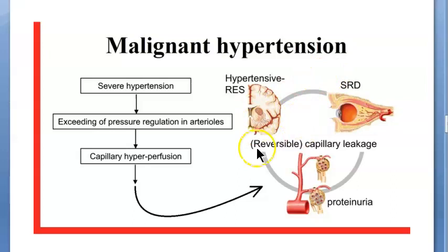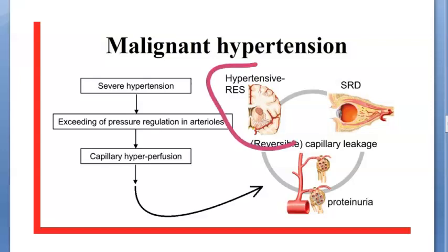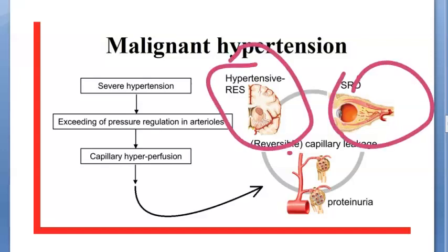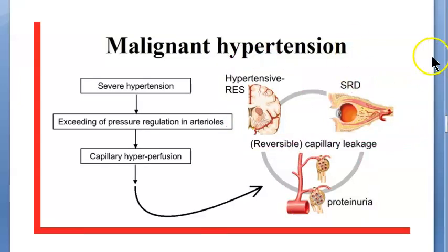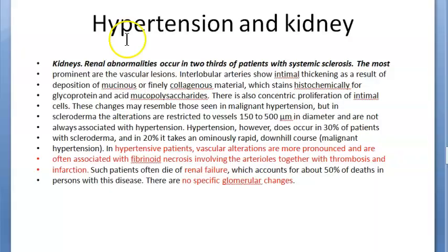In this condition the elevated pressure in arterioles affects the brain causing encephalopathy, the eyes, and the kidney. These are the three main organs affected. Since the kidney is frequently asked about in exams, we will focus a little more on it.